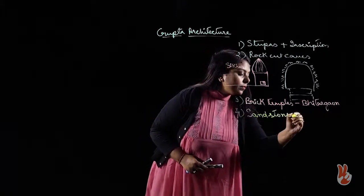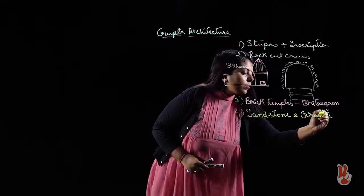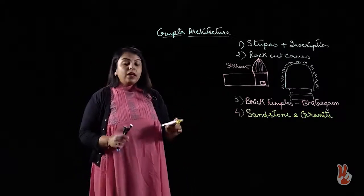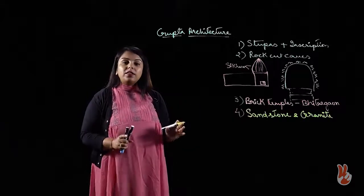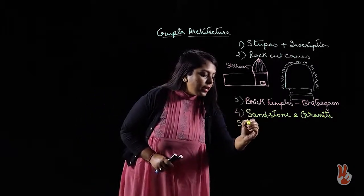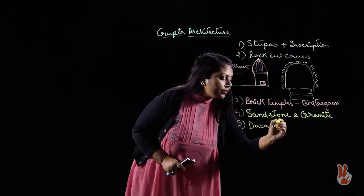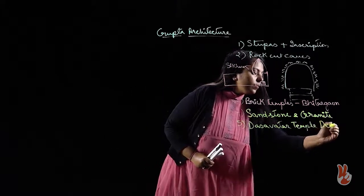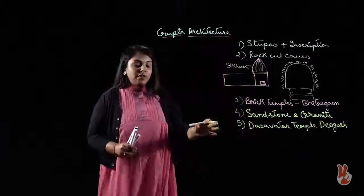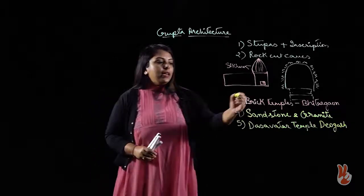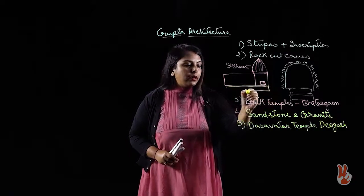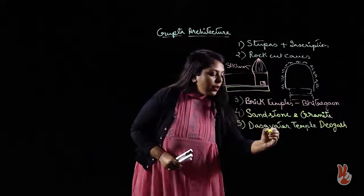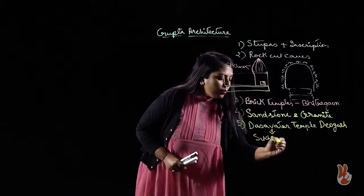From brick, we see the transformation of standalone temples to those made of sandstone and granite. The first temple with a prominent shikhara was the Dashavatar Temple in Deogarh. This temple is the first with both a prominent shikhara and a jagti — the platform on which the temple is constructed rather than directly on the floor. So it is the first temple featuring both a prominent shikhara and a jagti.